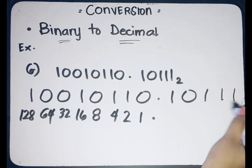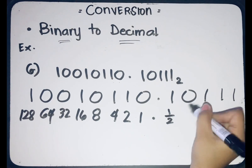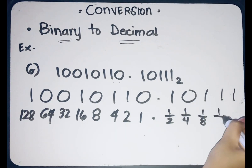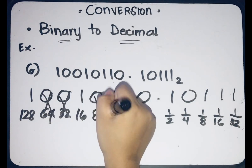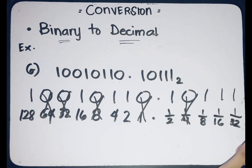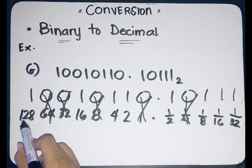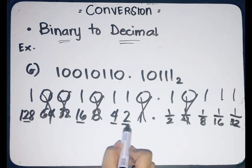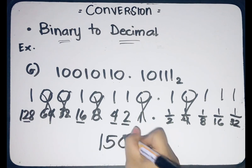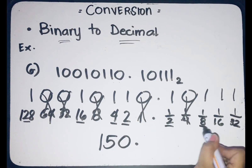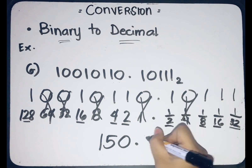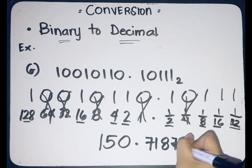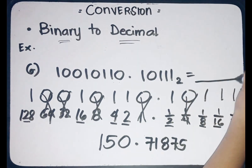From the point to the right, we start with 1 half, 1 fourth, 1 eighth, 1 over 16, and 1 over 32. Disregard the place values corresponding to zero. On the left side: 128 plus 16 plus 4 plus 2 equals 150. On the right side: 1 half plus 1 eighth plus 1 over 16 plus 1 over 32, converted to decimal equals 0.71875. So the final answer is 150.71875.